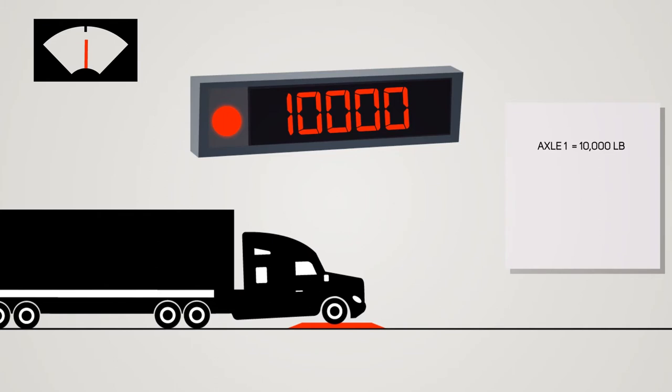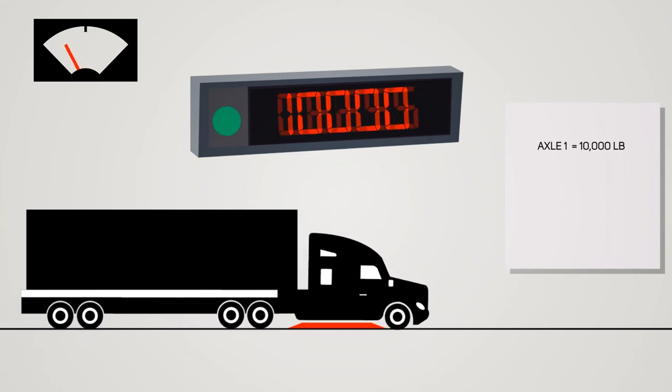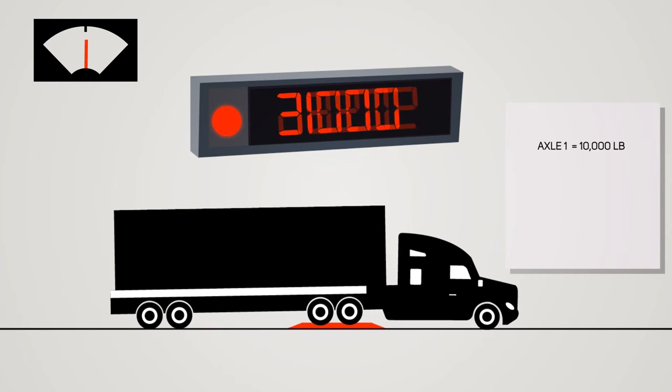The driver is prompted to stop when the weight threshold is met and the light turns red. The axle weight is then captured and displayed on the scoreboard. The light then turns back to green to signal the driver to move forward.